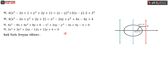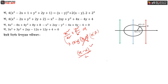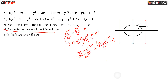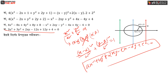Let's see how we get x² divided by a² plus y² divided by b² equal to 1. That's the standard form of the conic. The general form is ax² plus by² plus 2xy minus cx minus dy plus e equal to 0.